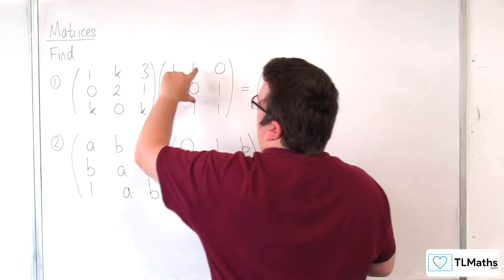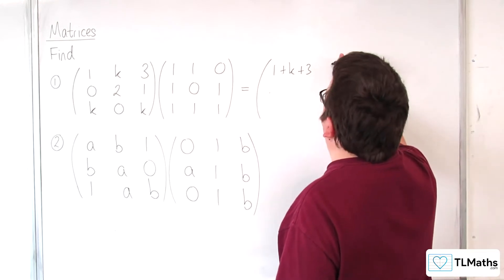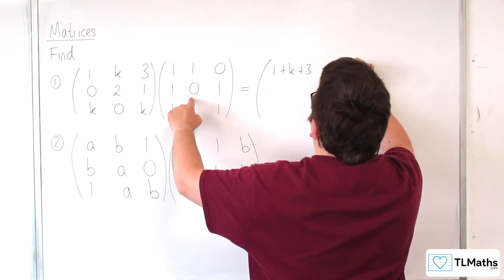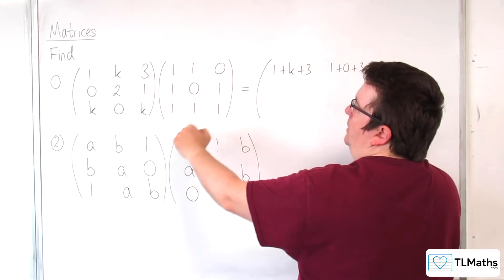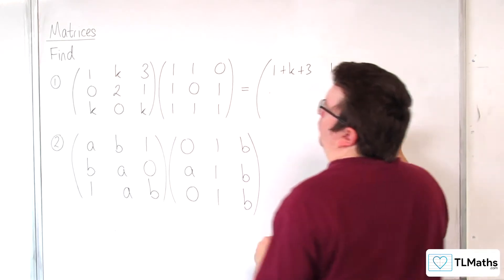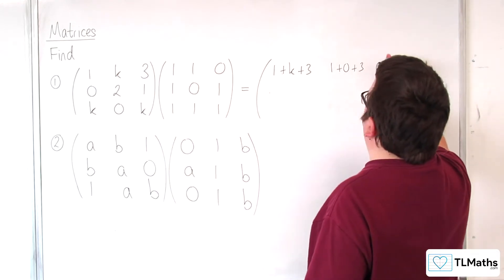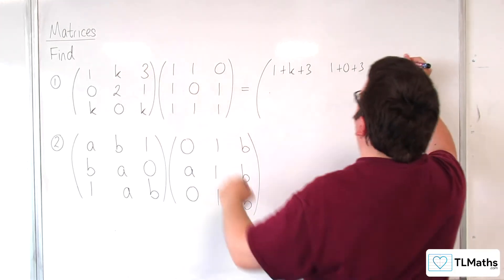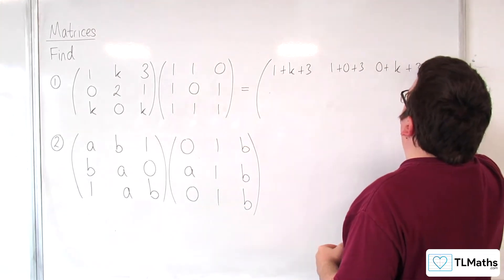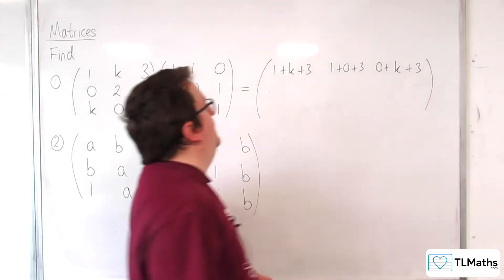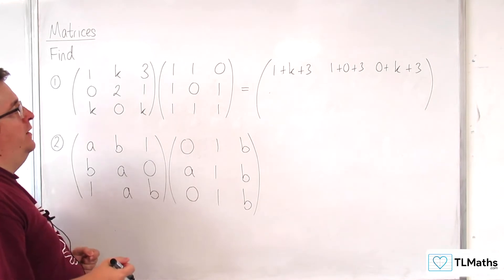Then we've got 1k3 multiplied by the 101, so we're going to get 1 times 1, k times 0, 3 times 1. Then we've got 1k3 times 0, 1, 1, so we get 1 times 0, then k times 1, then 3 times 1. I'm going to have to simplify it down here. So that's my top row.